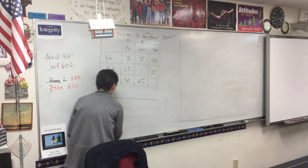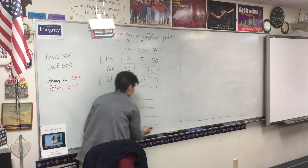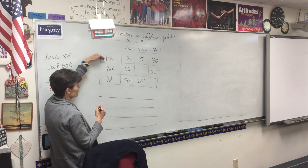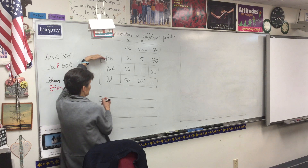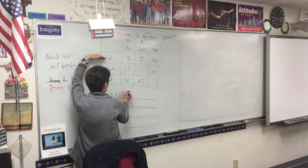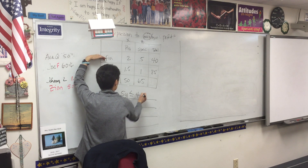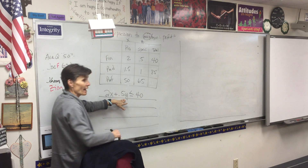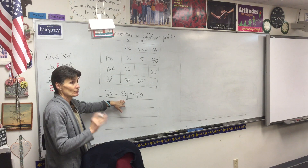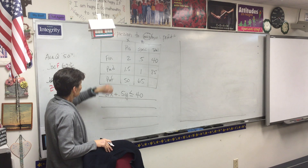Setting up those boxes pretty much gives you your equations. What is the equation for finishing? It would be 2x plus one-half y, less than or equal to 40. You can use one-half or 0.5 — it doesn't matter, whatever you want to do.